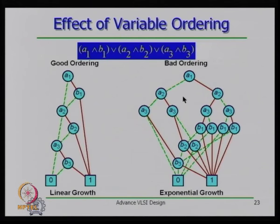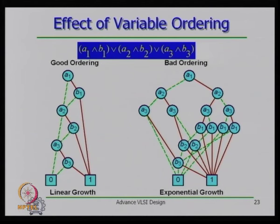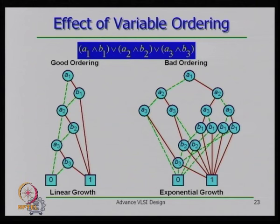When generating a ROBDD for a canonical form, you generate it for each design and compare node by node, edge by edge. You want the number of nodes and edges to be as small as possible so that comparison takes less time and less storage space.